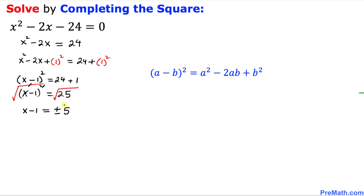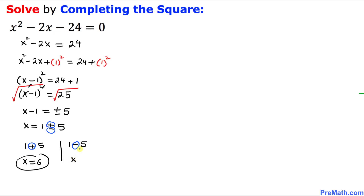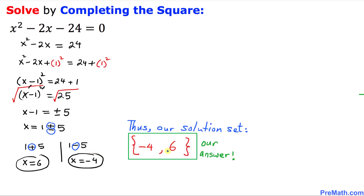We get plus or minus 5 because we're dealing with a quadratic equation. Moving the negative 1 to the other side gives x equals 1 plus or minus 5. Splitting the signs: 1 plus 5 gives x equals 6 as one solution, and 1 minus 5 gives x equals negative 4 as the other. Our final solution set is x equals 6 and x equals negative 4.